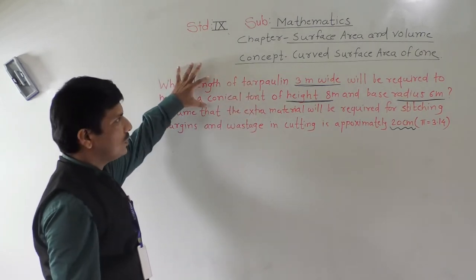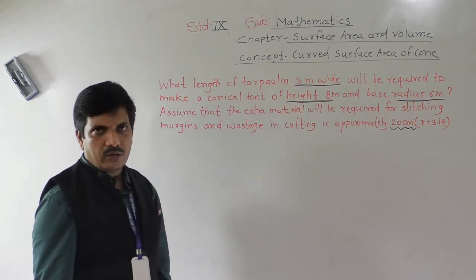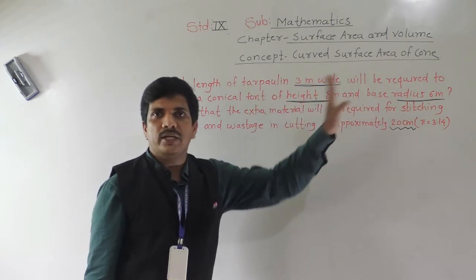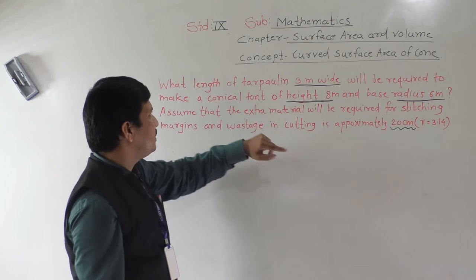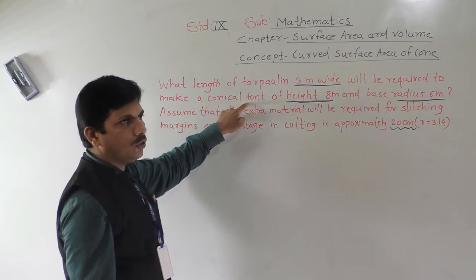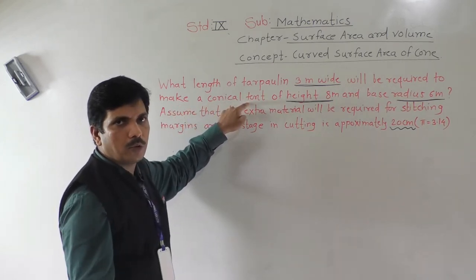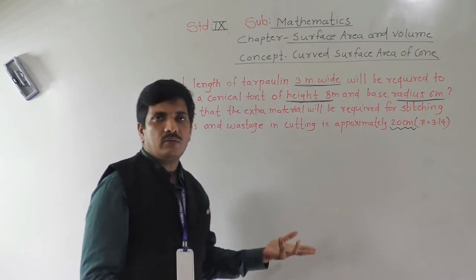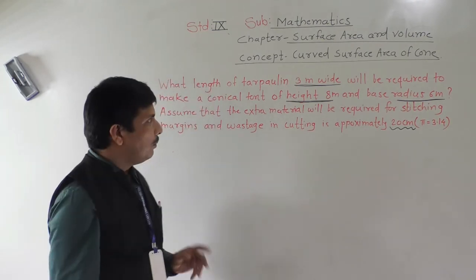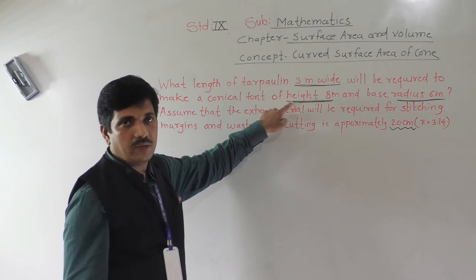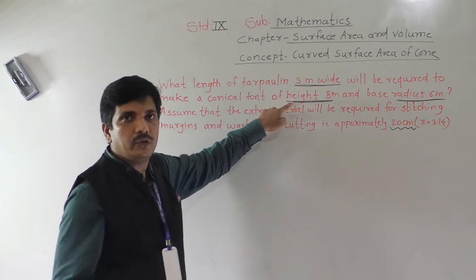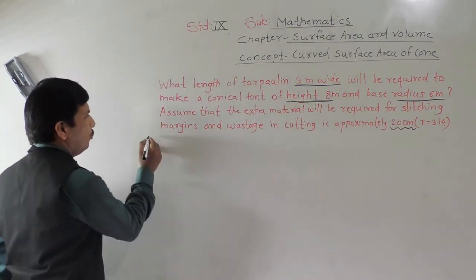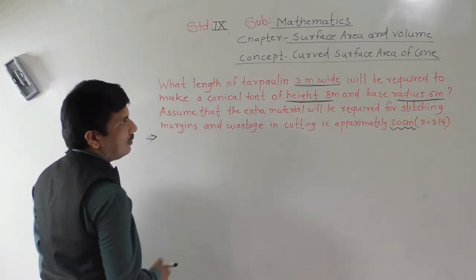Extra material required for stitching, margins and wastage in cutting is approximately 20 centimeters. That means this extra material is required — 20 centimeters — and we need to add this to the final answer. Here we have to find out length; width is given. Length into width equals area (curved surface area). A conical tent — tarpaulin means it will be open from the bottom — so we find curved surface area using formula pi × r × l, but slant height l is not given directly.